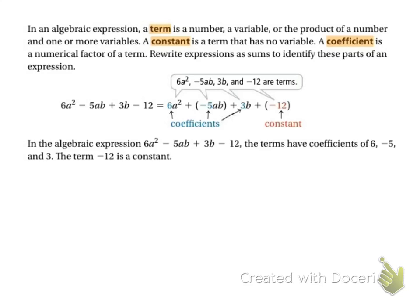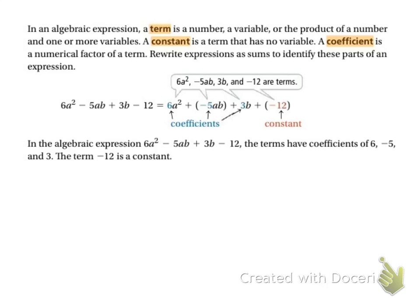A term is a number, a variable, or a product of a number. A constant is a term that has no variable — it's just a number. A coefficient is a numerical factor of a term — the number in front of the letters. For example, in an expression, the coefficients might be 6, negative 5, and 3, while negative 12 would be a constant.